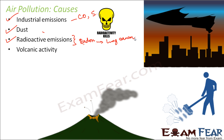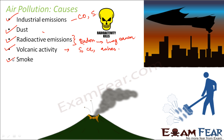Volcanic activity is another cause. Volcanic eruptions produce a lot of poisonous gases like sulfur and chlorine, as well as a lot of ash, which causes air pollution. Smoke is also a major cause — smoke comes out of fires and contains a lot of carbon monoxide.